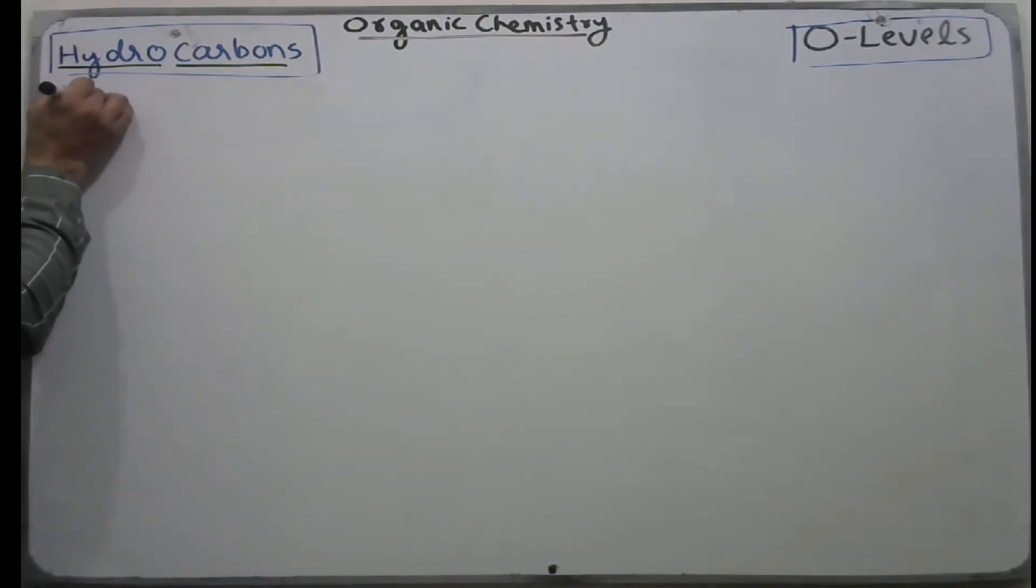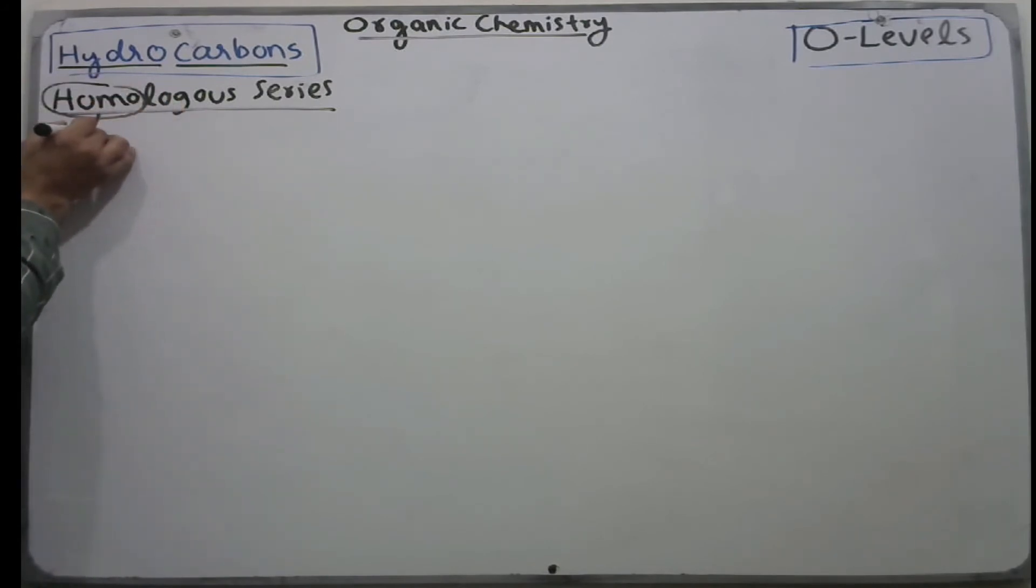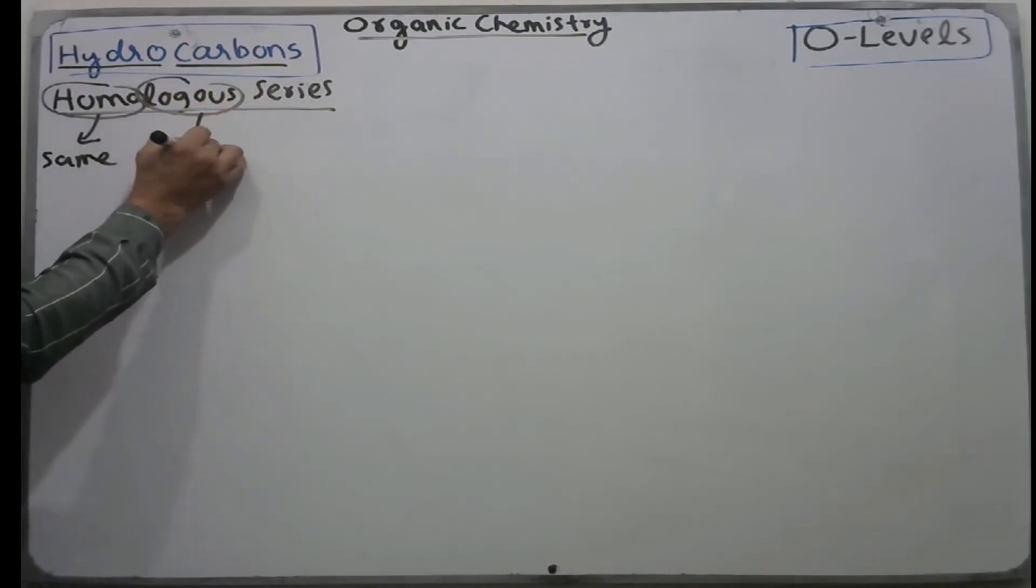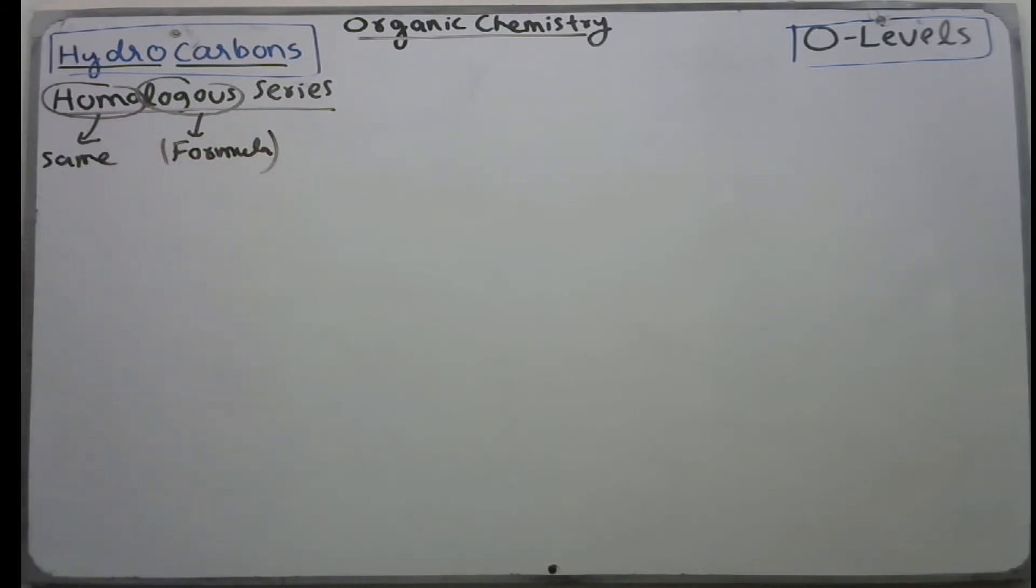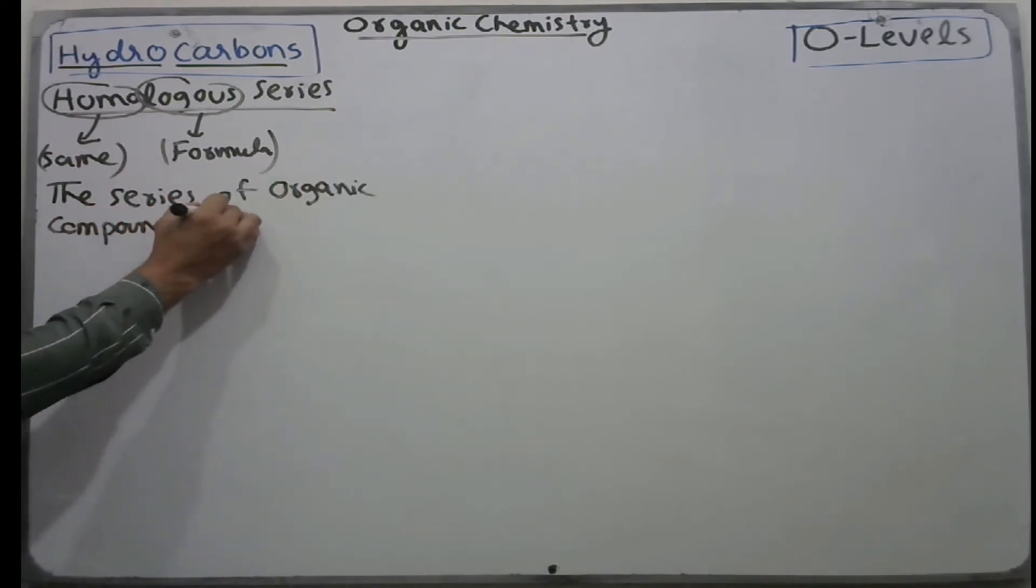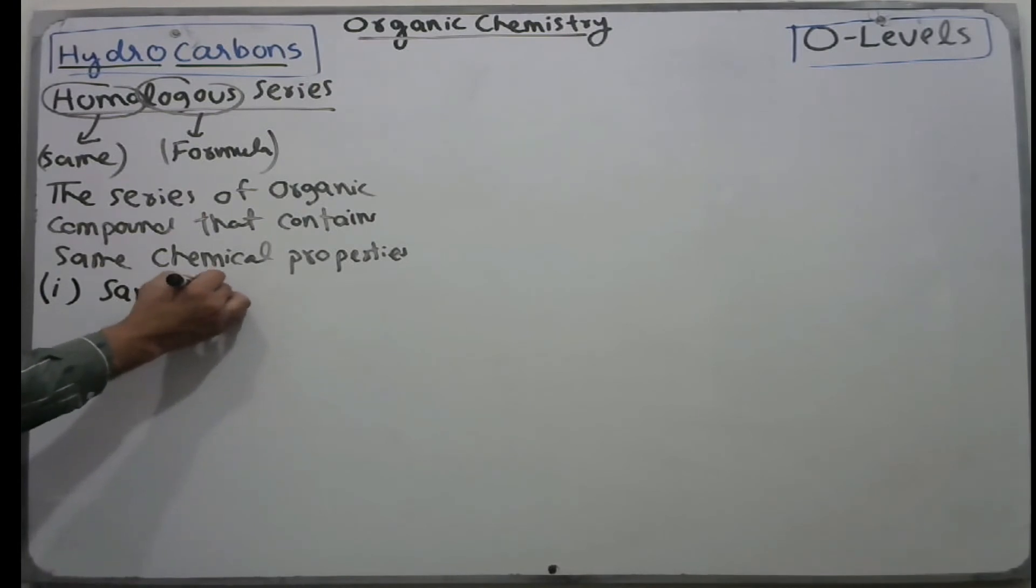Now we discuss homologous series. We define it as the series of organic compounds that contain same chemical properties, called homologous series. The members of these homologous series have the same functional group and same general formula.